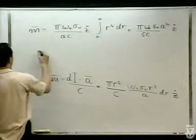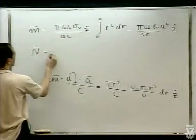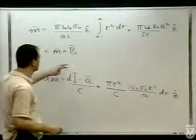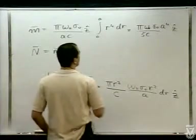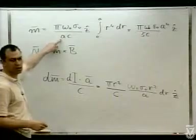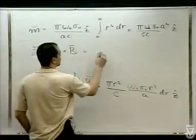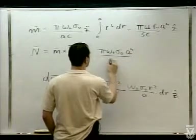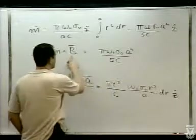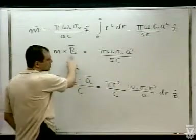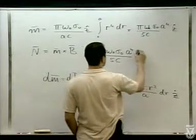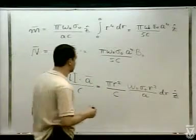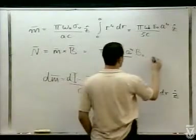המומנט יהיה — זה אקורד הסיום של השאלה הזאת — N = M × B. B החיצוני הוא B₀ x̂. כלומר: N = π אומגה-אפס סיגמה-אפס A⁴/(5C) × (ẑ × B₀ x̂). וẑ × x̂ = ŷ, חיובי.